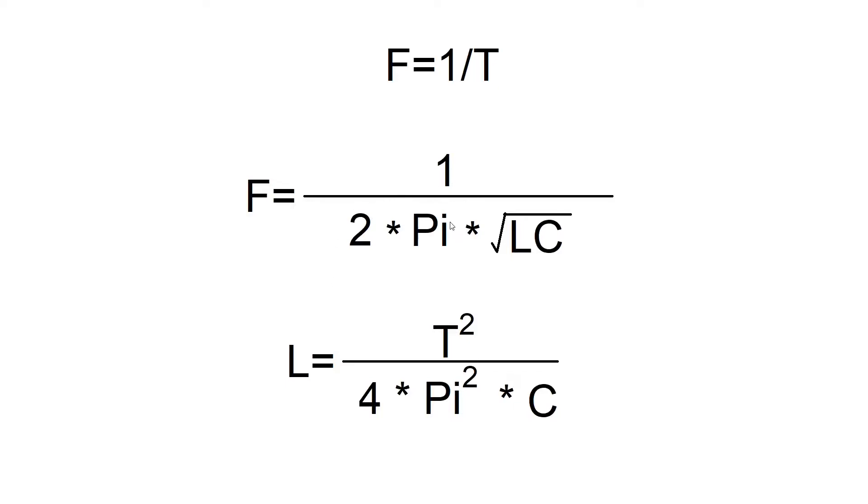This here is the formula for the ideal free oscillating LC circuit. F is frequency, T is period. Out of these two formulas we can derive the formula for inductance and we will use this formula in our Arduino sketch.